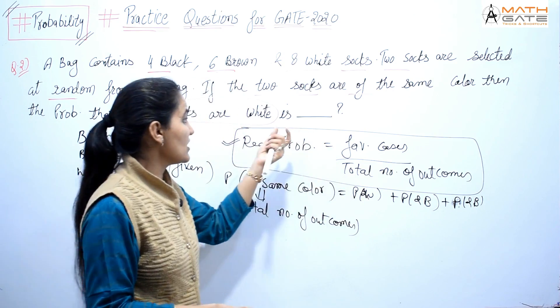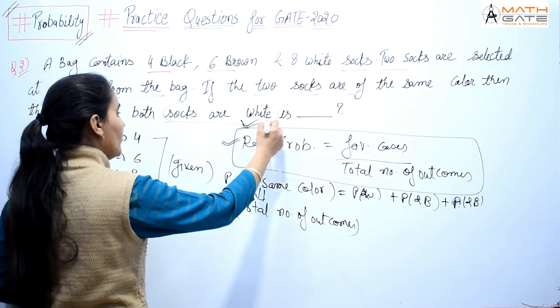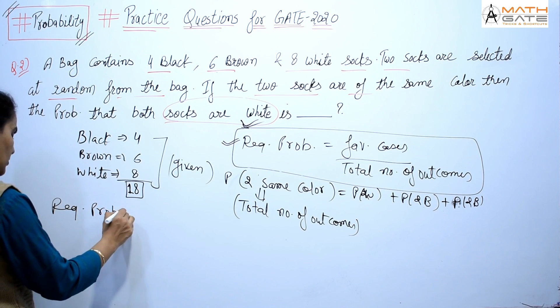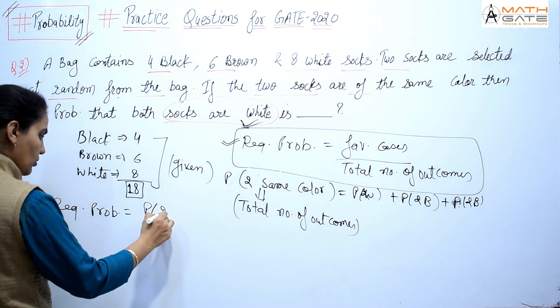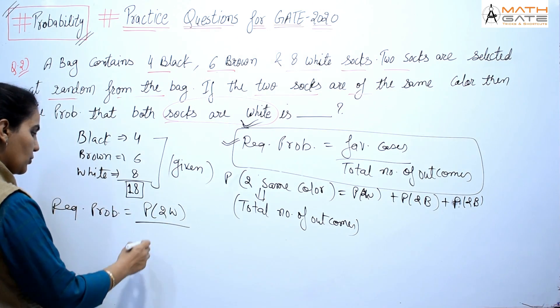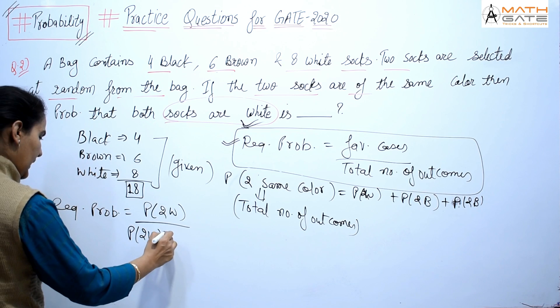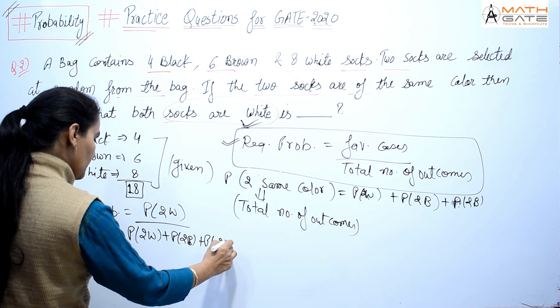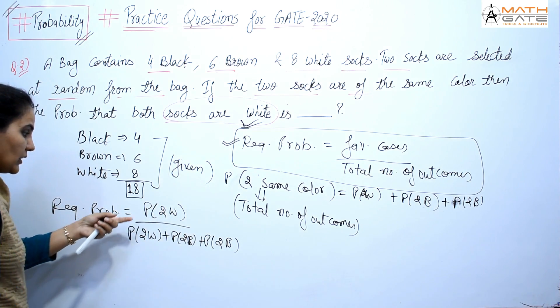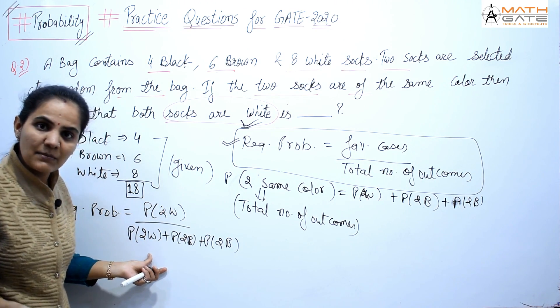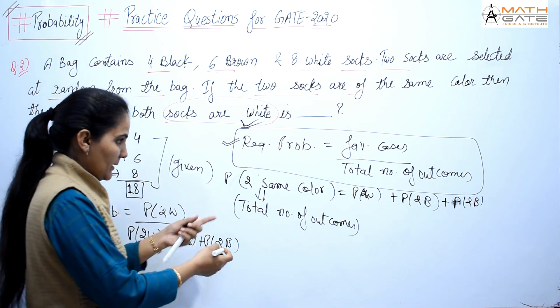Which case should it be? Same white color. Required probability equals both of them white color: probability of two white color by probability of two white plus probability of two black plus probability of two brown. What is your favorable by total? What is your favorable? What is your total? Same color, right?